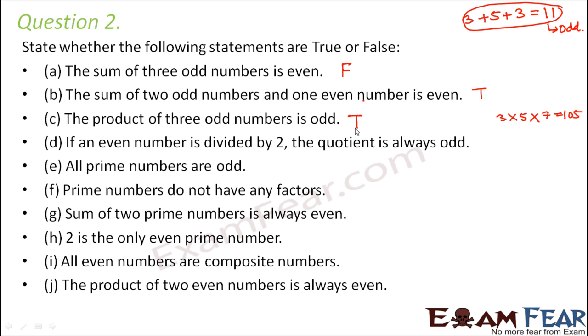If an even number is divided by 2 the quotient is always odd. Now this is false because any even number will be exactly divisible by 2. So let us say 14. When it is divided by 2, the quotient is odd. Now when you divide 16 by 2, the quotient is even. So in this case the quotient can be even or odd.